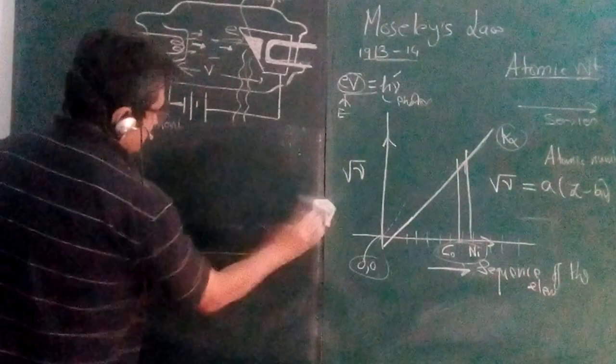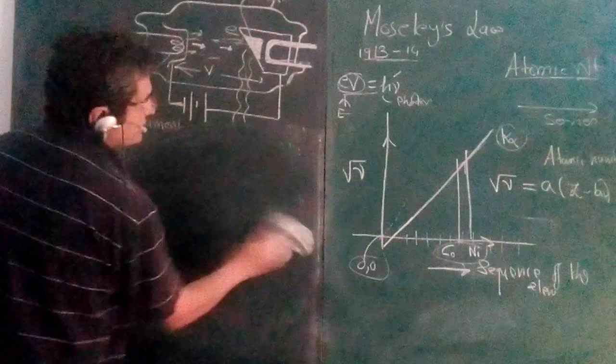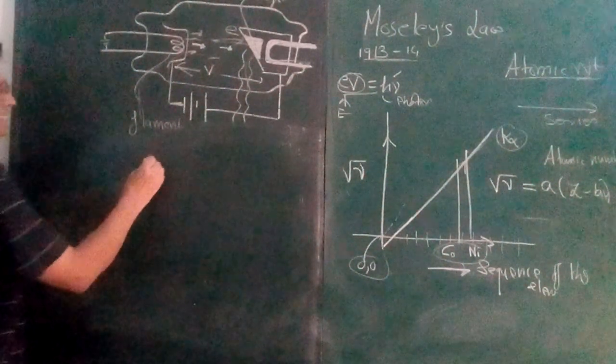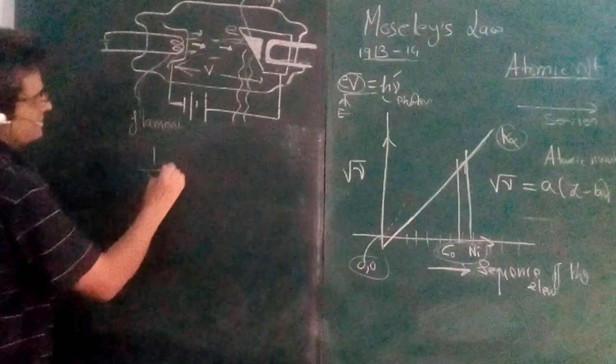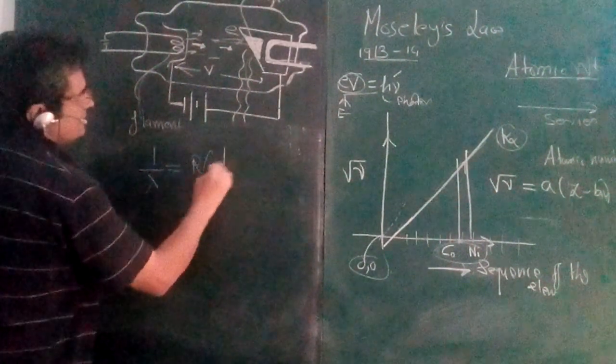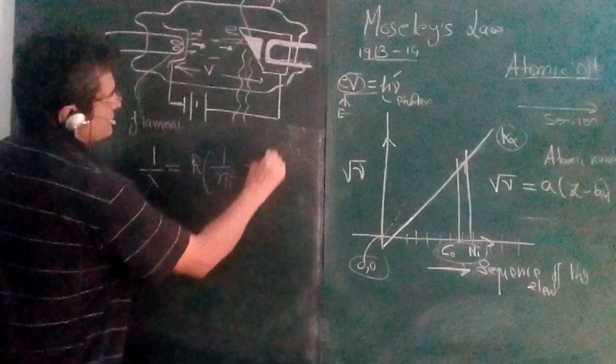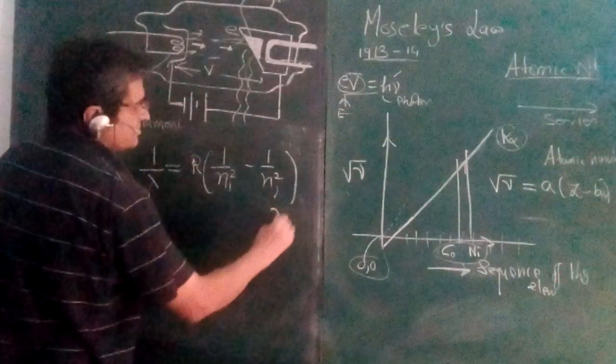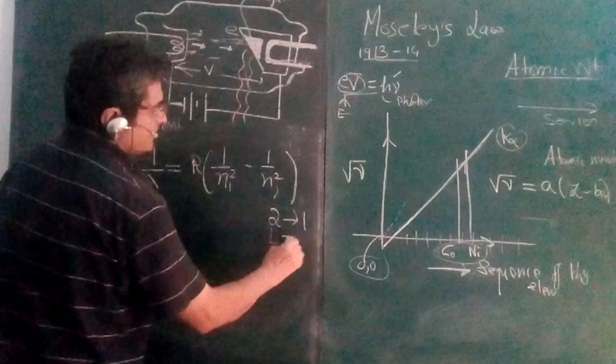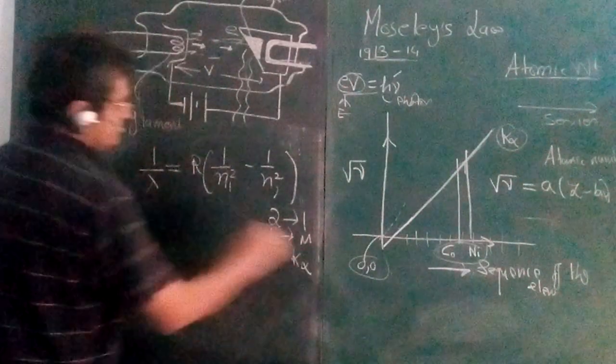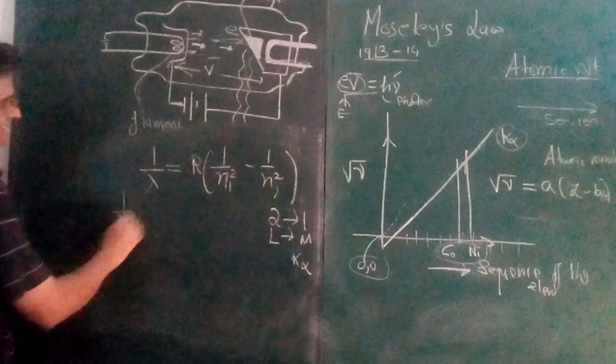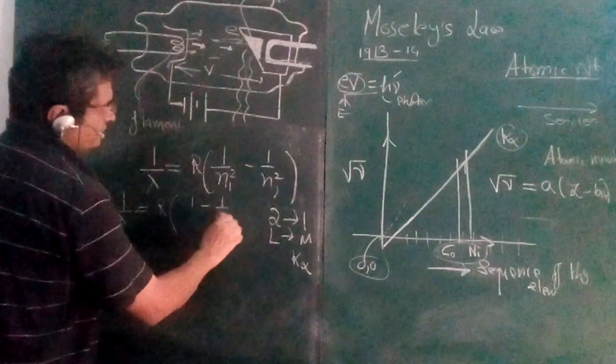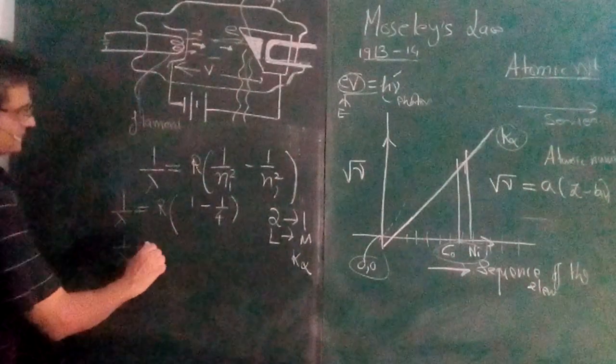Now let us correlate this interesting relationship with our Bohr model for the hydrogen atom. Based on that we had arrived at: 1/λ = R(1/n₁² - 1/n₂²). So if the electron is jumping from second to one, that is L to K, you are having K alpha line. So I write it like this: 1/λ = R(1 - 1/4) = R(3/4). Multiplied by c it becomes frequency μ.